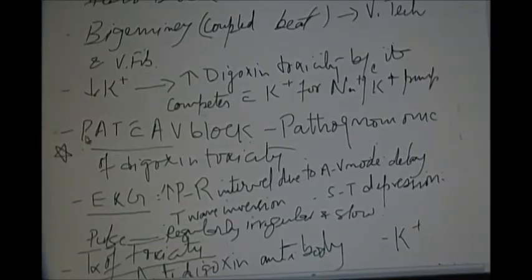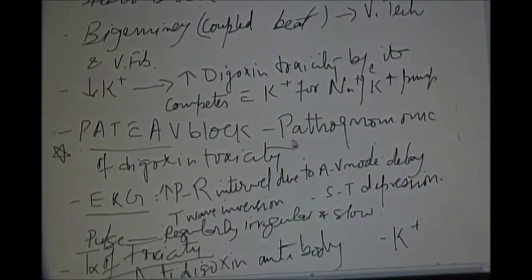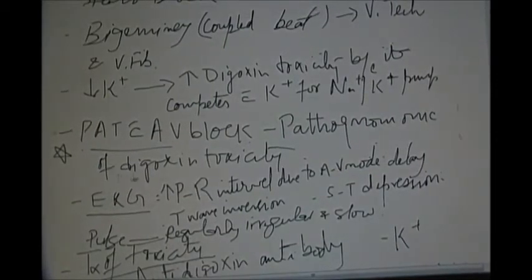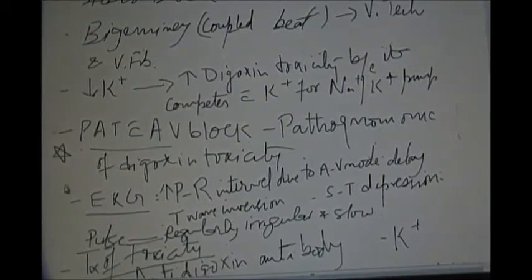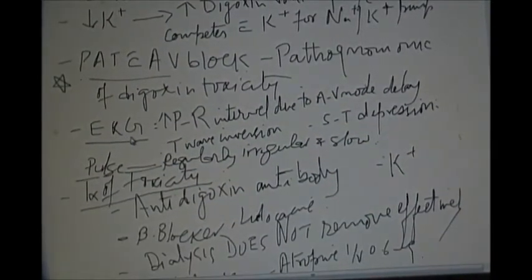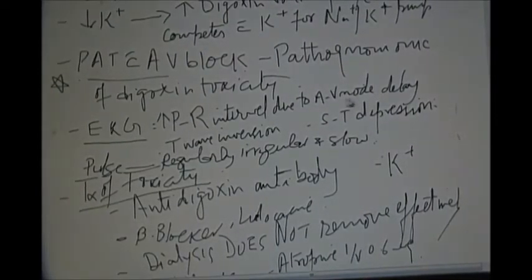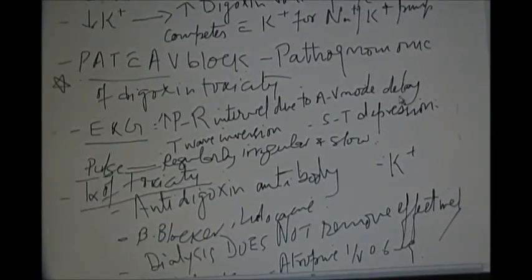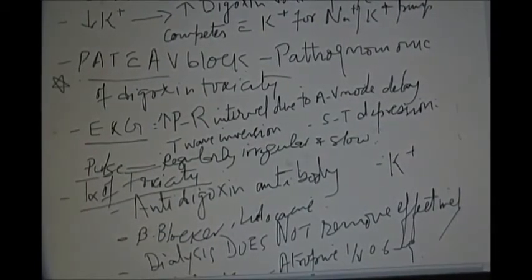Paroxysmal atrial tachycardia with AV block is pathognomonic of digoxin toxicity. What are the EKG features of digoxin toxicity? It increases the PR interval due to AV nodal delay, T wave inversion, and ST depression.